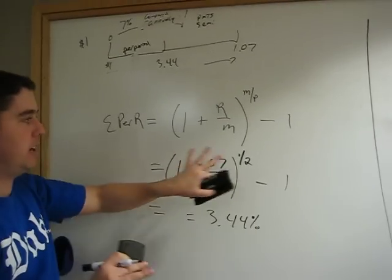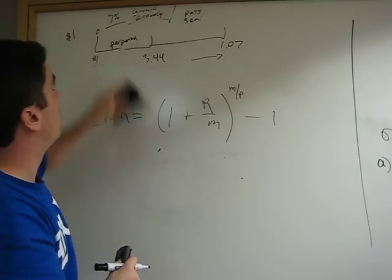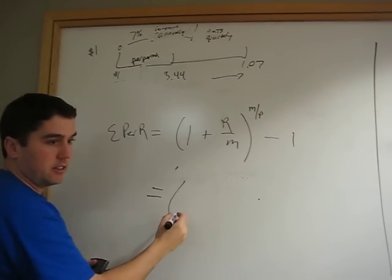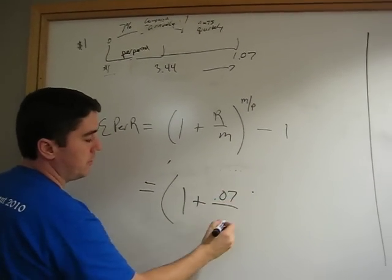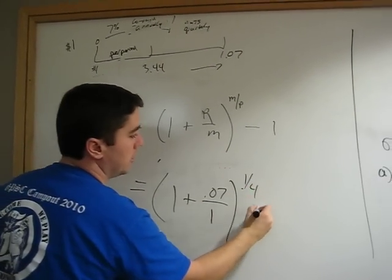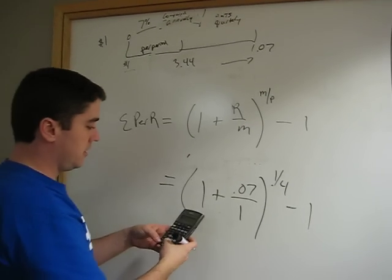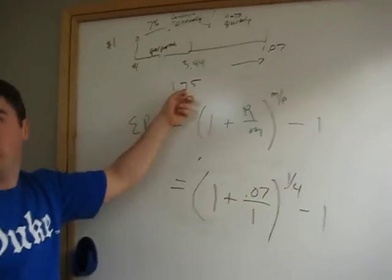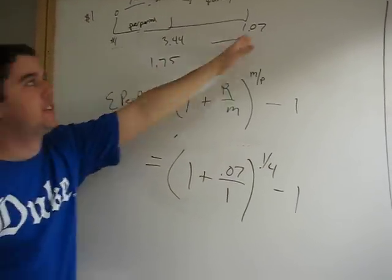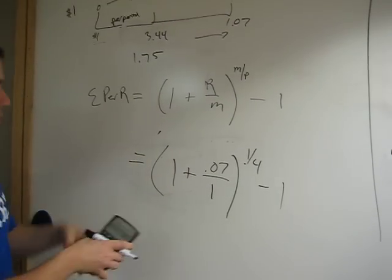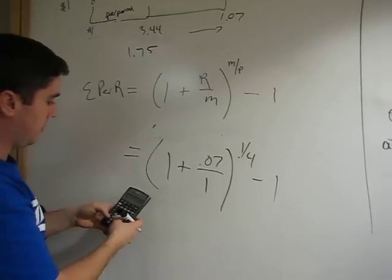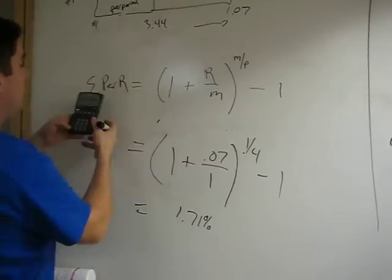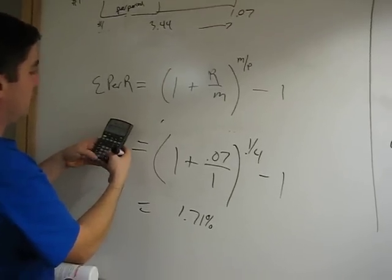Now let's prove that to make sure you guys are 100% confident with this by changing it up and say we're not going to get our payments semi-annually. We'll get our payments quarterly. So if we get our payments quarterly, what's the formula? 1 plus 0.07 divided by 1, raised to the 1 over 4 minus 1. So now just to get the intuition, 0.07 divided by 4 equals 1.75. So should our effective periodic rate be higher or lower than this? It should be less. Let's try it out. So we get 1.07 raised to the 0.25 equals, when we subtract 1, 1.71%.